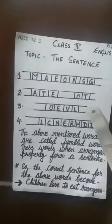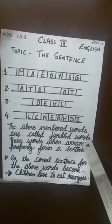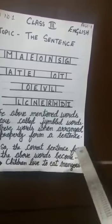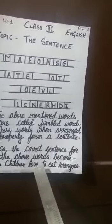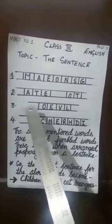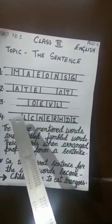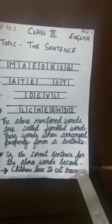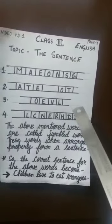These words — one, two, three, four — are all called jumbled words. These words when arranged properly form a sentence. The correct sentence for the above words becomes: children love to eat mangoes. If we unscramble these jumbled words, the first word becomes mangoes, the second becomes eat, the third becomes love, and the fourth becomes children.